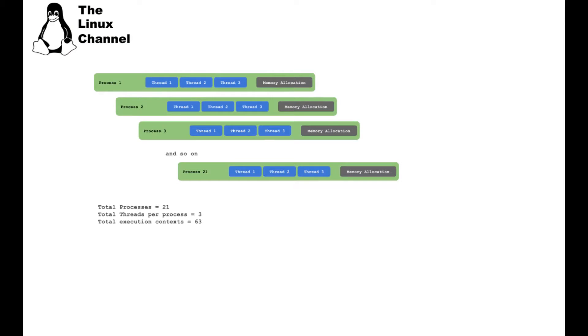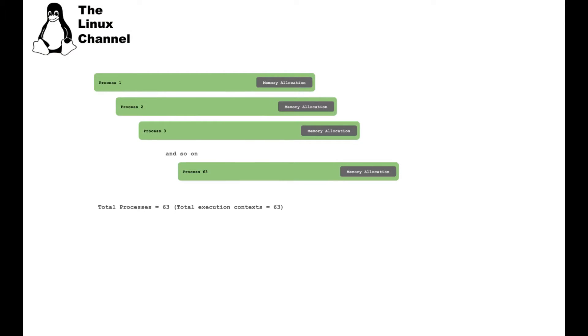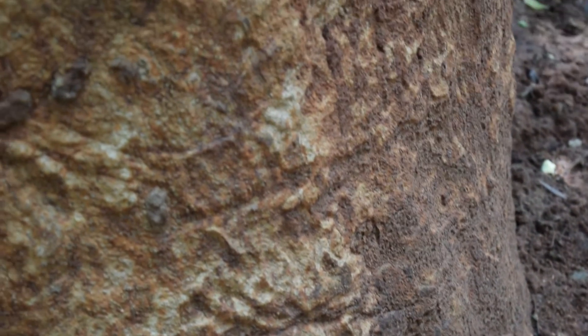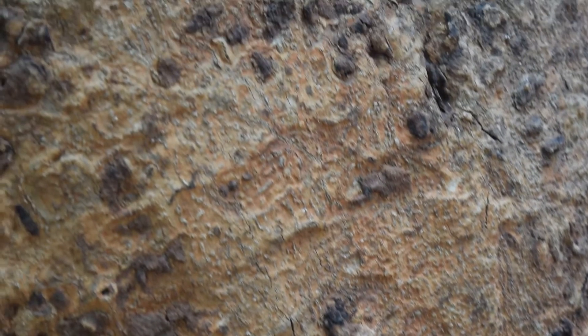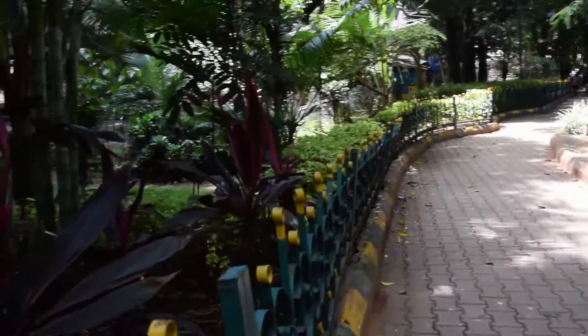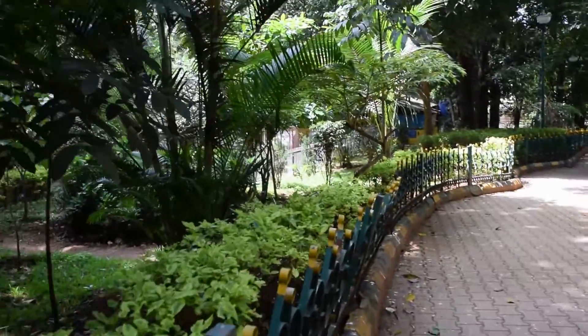With threads, each process doesn't need to reallocate those shared resources again. In a purely multi-process architecture without threads, each resource has to be reallocated in each process context, putting extra load on the system. On a high-performance server platform with immense memory but limited CPU resources, you choose the optimal number of threads per process and the optimal number of process contexts.